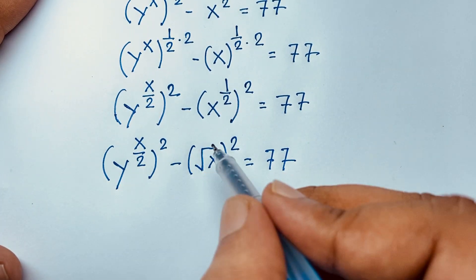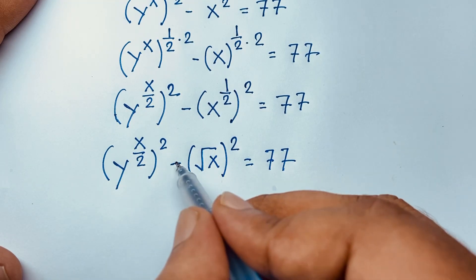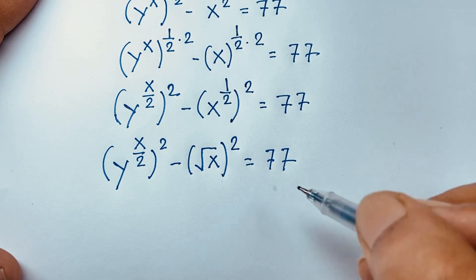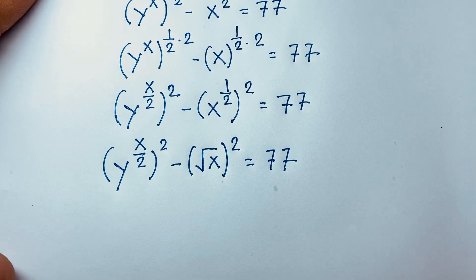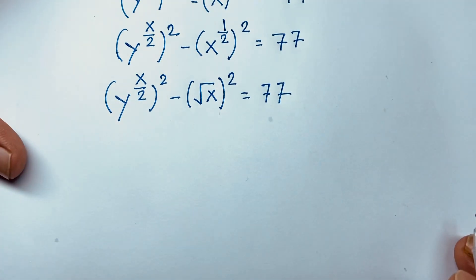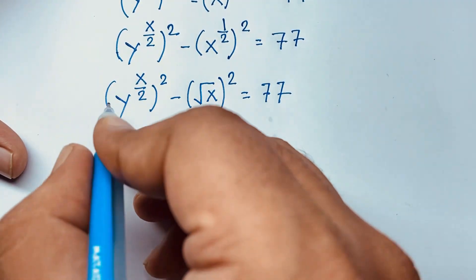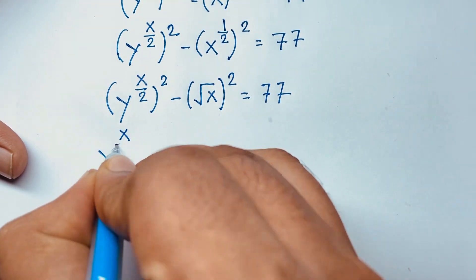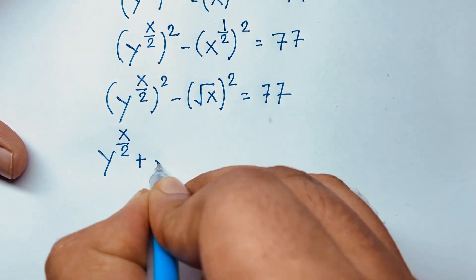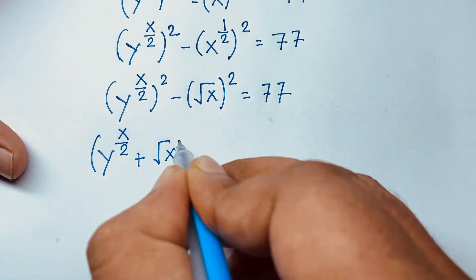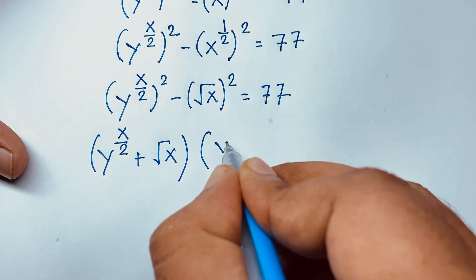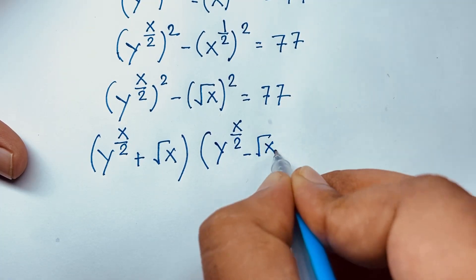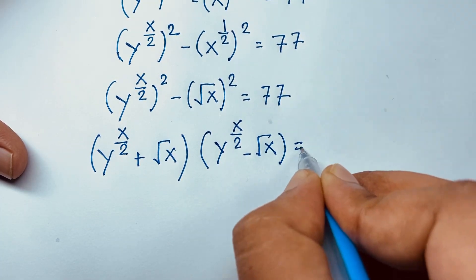If you think this is a and this is b, you know that a squared minus b squared equals a plus b times a minus b. According to this identity, it will be y to the power x over 2 plus square root x, times y to the power x over 2 minus square root x, is equal to 77.